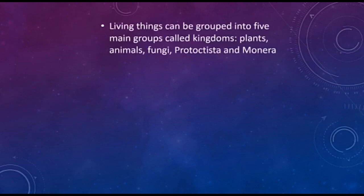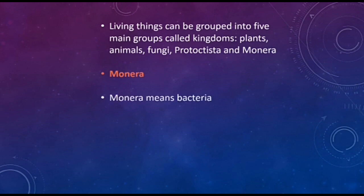Living things can be grouped into five main groups called kingdoms: plants, animals, fungi, protista, and monera. First we will discuss monera. Monera means bacteria.